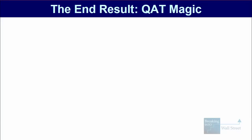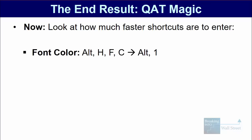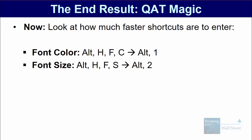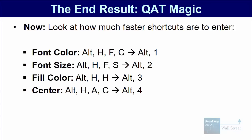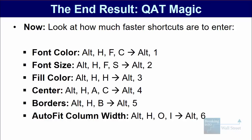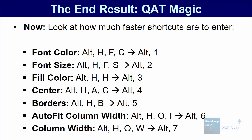The end result is that your life will become a lot easier and shortcuts will be a lot faster to enter. Font color with the built-in shortcut is Alt-H-F-C; with our version, it's just Alt-1. Font size is Alt-H-F-S; ours is Alt-2. Fill color is Alt-H-H; ours is Alt-3. Center align is Alt-H-A-C; ours is Alt-4. Borders is Alt-H-B; ours is Alt-5. Auto fit column width instead of Alt-H-O-I or Alt-O-C-A is just Alt-6. Column width instead of Alt-H-O-W is just Alt-7. In general, we've reduced these from three or four keystrokes down to two in each case.